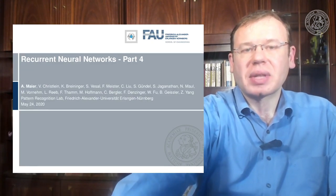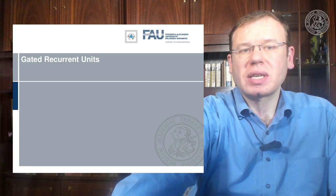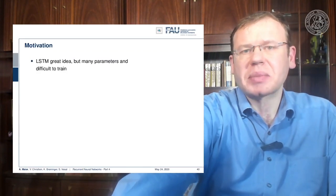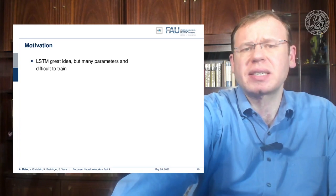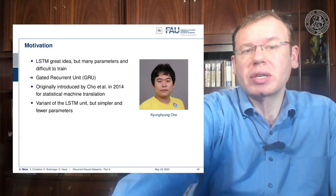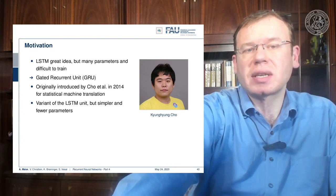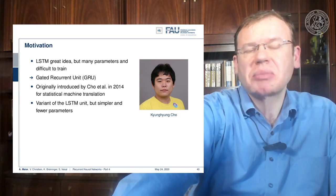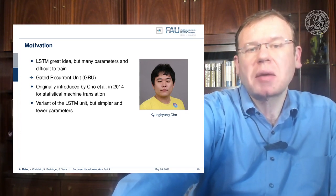Welcome back to deep learning. Today we want to talk about gated recurrent units, a simplification of the LSTM cell. As they say, the stuff that works best is really simple. The idea here is that the LSTM is great but has a lot of parameters and is difficult to train. Cho came up with the gated recurrent unit, introduced in 2014 for statistical machine translation. You could argue it's a variant of the LSTM, but it's simpler.